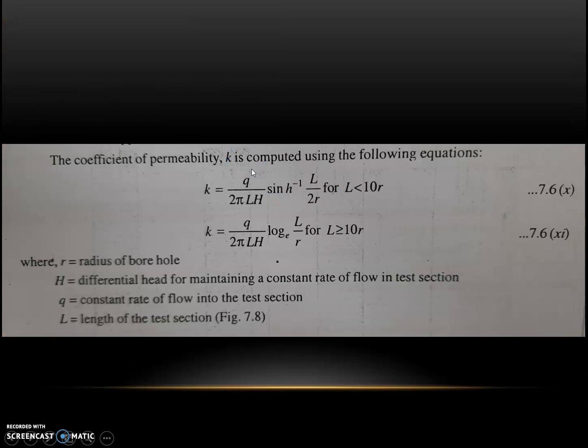The coefficient of permeability K is found using formula K equal to Q divided by 2πLH sinh⁻¹ of L divided by 2R for L less than 10R, and for L greater than or equal to 10R, the formula to find K is Q divided by 2πLH log of L divided by R to the base e.